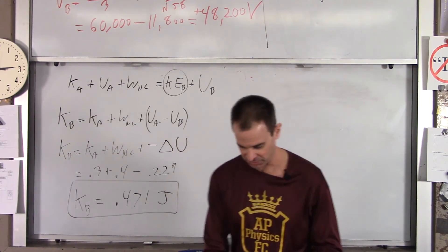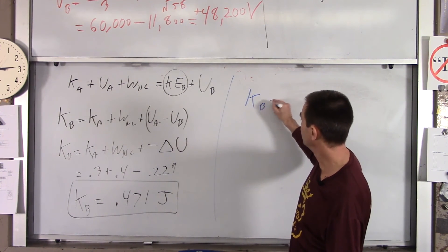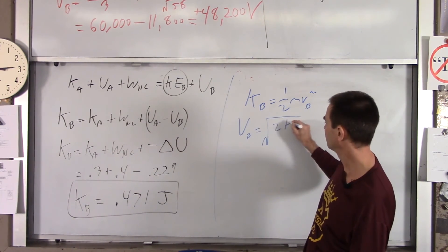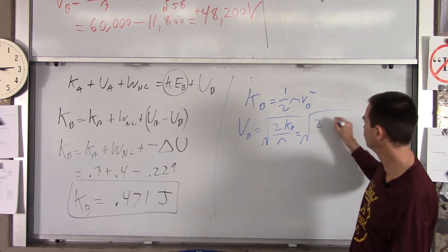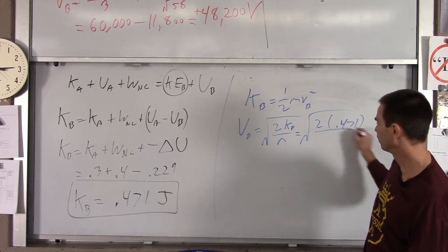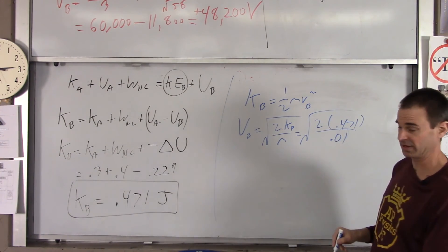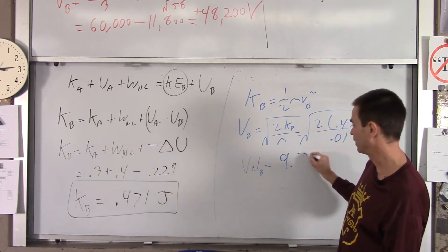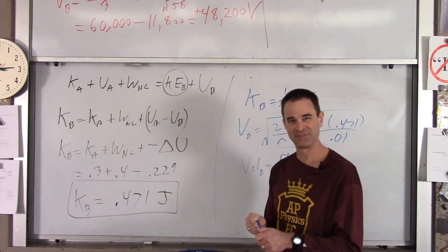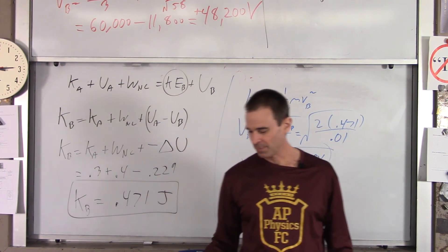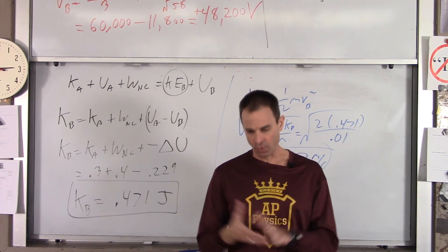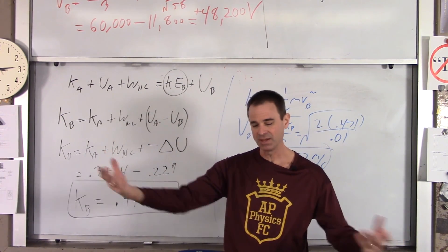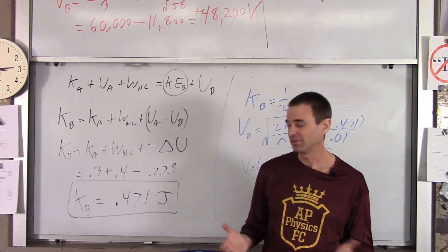Finally, what's his velocity? KE_B equals one-half times mass times v_B squared, so v_B equals the square root of 2 times KE_B over m, which is the square root of 2 times 0.471 over 0.01 kilograms, giving 9.7 meters per second. That's an example of using new concepts — voltage and electric potential energy — in combination with conservation of energy. Whenever an object moves from A to B, conservation of energy is usually your best bet.